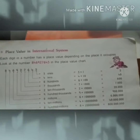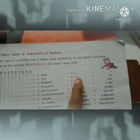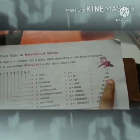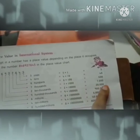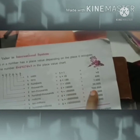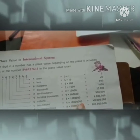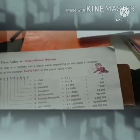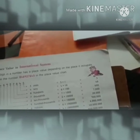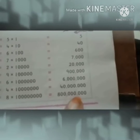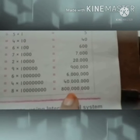Now calculating place values: 5 × 1 = 5. 4 × 10 = 40. 6 × 100 = 600. 7 × 1,000 = 7,000. 2 × 10,000 = 20,000. 9 × 100,000 = 900,000. 6 × 1 million = 6 millions. 4 × 10 millions = 40 millions. 8 × 100 millions = 800 millions. See the commas: the first comma is after 3 digits, and the second comma is again after 3 digits.